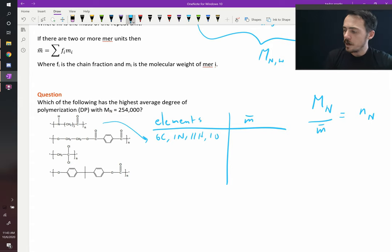Let's do the next one. The next one has four oxygens, ten carbons, it has ten hydrogens as well. When I add that one up, it's got 194 grams per mole.